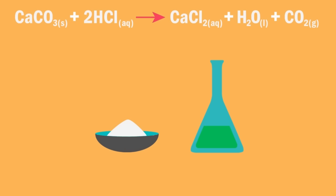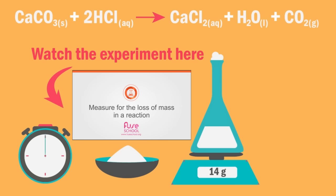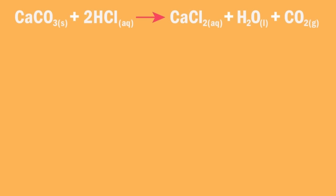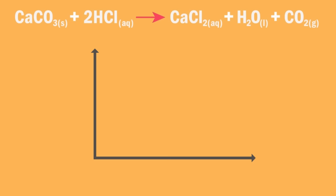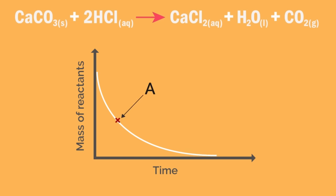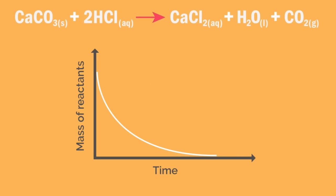As the reaction proceeds, the reactants lose mass because carbon dioxide gas is given off. We can measure the decrease in mass of reactants using this type of apparatus. Based on our measurements, we plot a graph of mass of reactants against time. The rate of reaction at point A is given by the gradient at A, which is y over x.